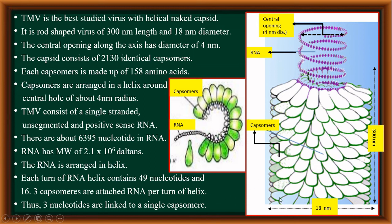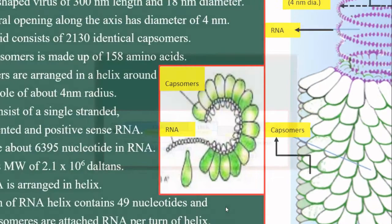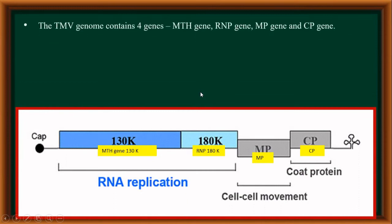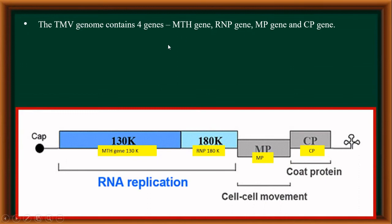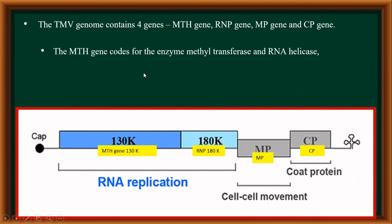The genome of tobacco mosaic virus consists of 4 important genes. One of them is called the MTH gene — that is, the methyltransferase and RNA helicase gene. The methyltransferase activity plays a role in RNA capping, and the role of helicase is not entirely clear but it may play a role in the removal of RNA helices during translation.